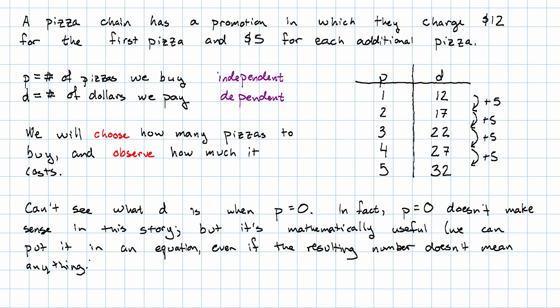By mathematically useful, we mean we can put it into an equation, even if the resulting number doesn't really mean anything. In this case, we want to know what d is when p equals zero, because that'll let us write our equation.